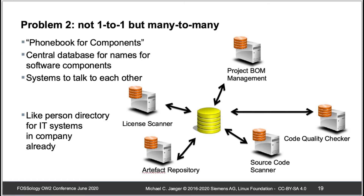The basic idea of SW360 is to serve large organizations as a component catalog — a phone book for components — where all software components in the organization referenced by different systems can be centrally stored as a hub. Mapping can be done centrally there. SW360 is not a catalog of the most popular or important 10,000 components — it is rather a catalog of components which are in use in your specific organization.